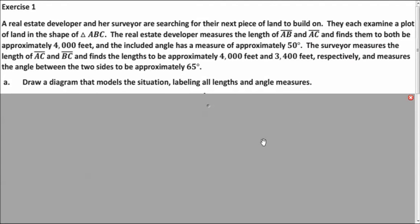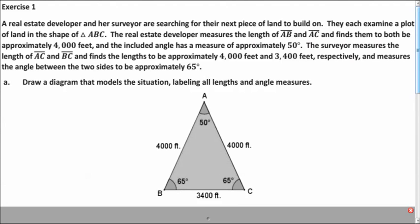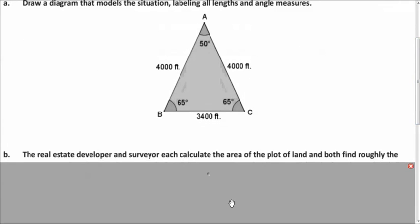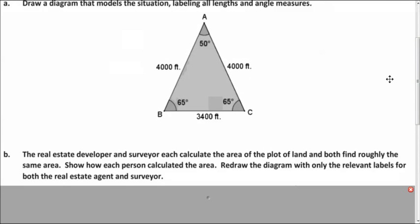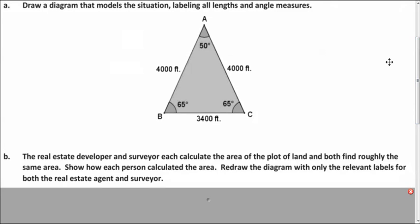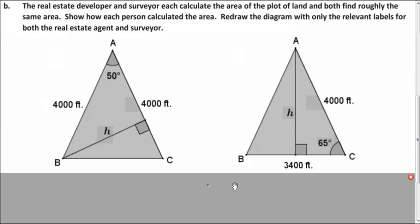So here's an example of a surveyor measuring the different dimensions on a triangular plot of land. I'd like you to draw a diagram that describes this first and label all the lengths and angles appropriately. So here is my triangle. So now the two people involved here, the real estate developer and the surveyor, each calculated the area. And they got about the same answer. So I'm going to show you the diagrams that they used. And I'd like you to calculate the area of the triangle by using the formula that we've been using this lesson, one-half ab times the sine of theta. So here are the two diagrams that they used. Same triangle, we just redrew it with the relevant information. Use the formula to figure out the area of each one.